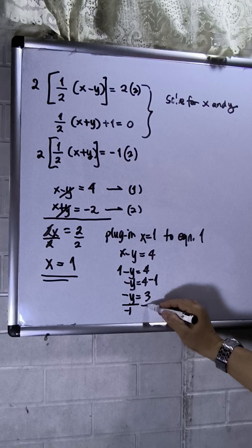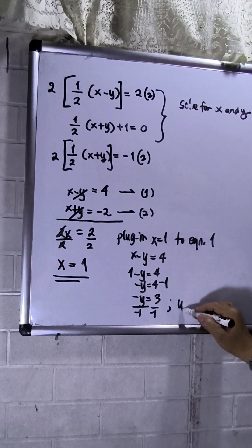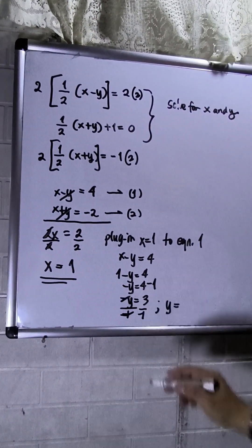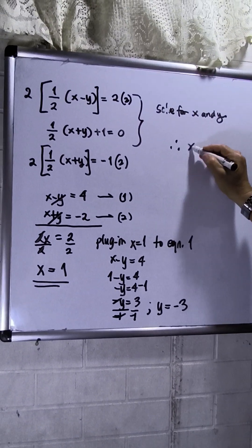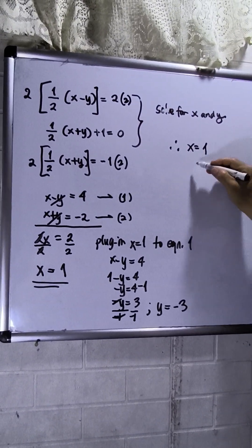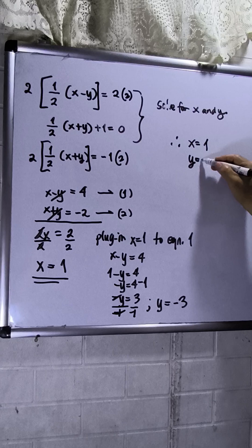So divide negative 1 both sides. y is equals to negative 3. So therefore, x is equals to 1 and y is equals to negative 3.